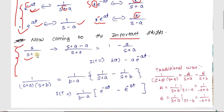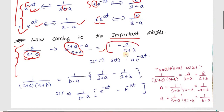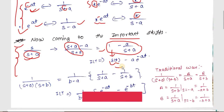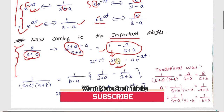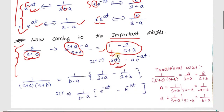For s/(s+a), you adjust the numerator by adding and subtracting a: write the numerator as (s+a)−a. This gives (s+a)/(s+a) − a/(s+a), which simplifies to 1 − a/(s+a). Now you can take the inverse Laplace transform easily: the inverse Laplace of 1 is δ (delta), and a/(s+a) gives a·e^(-at). So the result is δ − a·e^(-at).